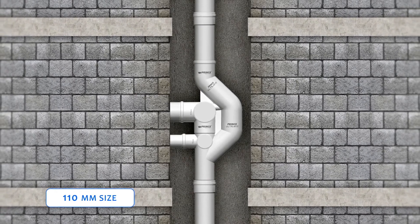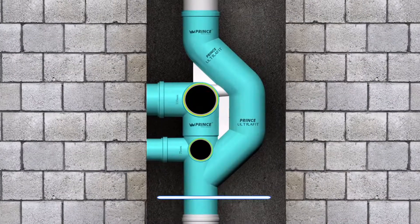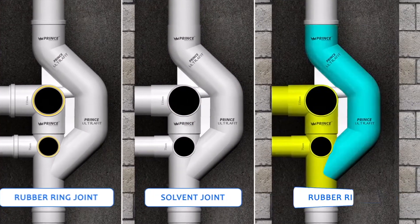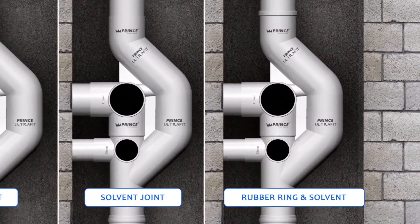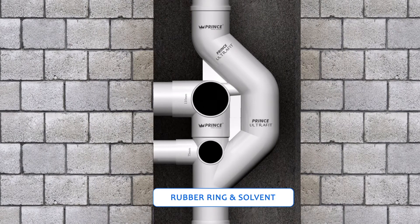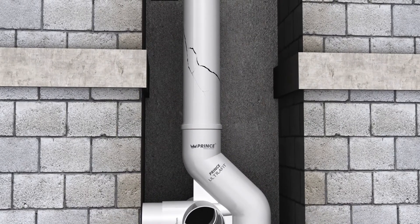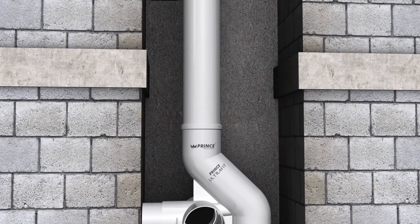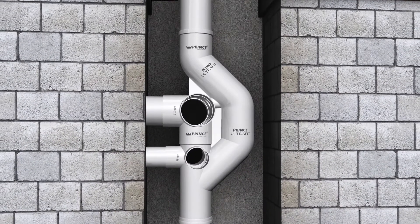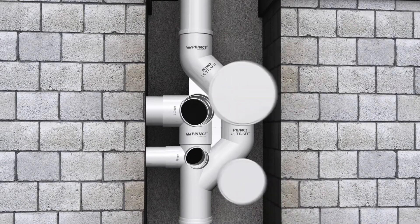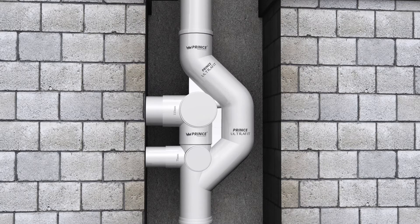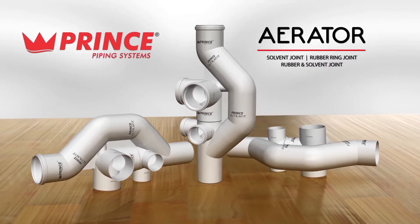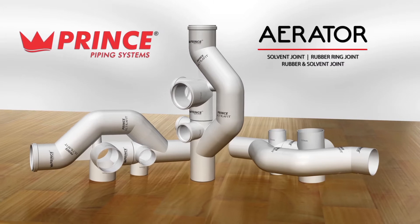In addition, the Aerator is easy to install with flexibility of space and reduction in joints. It comes in 110 millimeter size and is available in both rubber ring joint and solvent joint. Prince Pipes is the only company which combines both rubber ring and solvent joint into one. This helps to replace the 110 millimeter pipe connected to the Aerator in case of any damage. If less than six connections are required, unused inlets can be closed with the help of socket plugs.